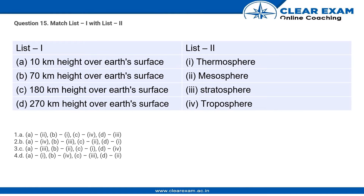Hello students, here is a very factual question. We need to match the list 1 options to the list 2 options. List 1 is the distances or heights from the earth's surface, and list 2 encompasses the spheres or regions in which these heights will be present. Assume you are at the ground position and placed from the ground to the heights mentioned. You need to identify which sphere you will be in.